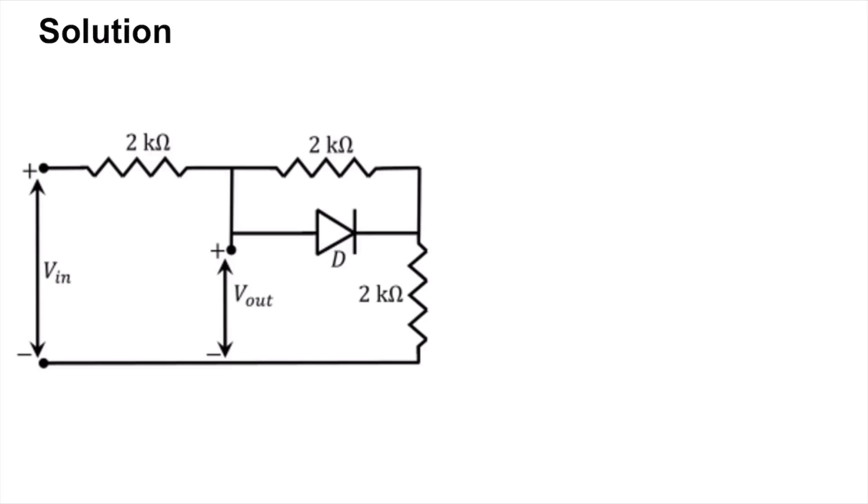So this is the circuit. Let's first analyze it for when the diode is on. When the diode is turned on you can replace it as I have done here by a voltage source 0.7 volts.